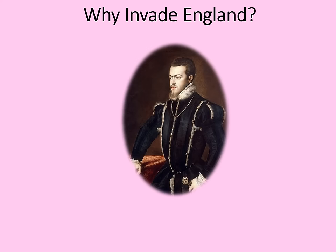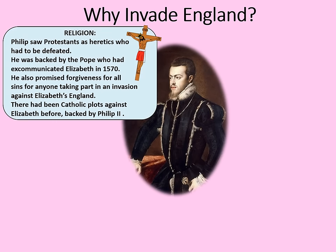Why invade England in the first place? The first reason is religion. Philip II of Spain saw Protestants as heretics who had to be defeated. He was backed by the Pope, who had excommunicated Elizabeth in 1570, and promised forgiveness for all sins for anyone taking part in an invasion against Elizabeth's England. There had been Catholic plots against Elizabeth before, and these had often been backed by Philip II.